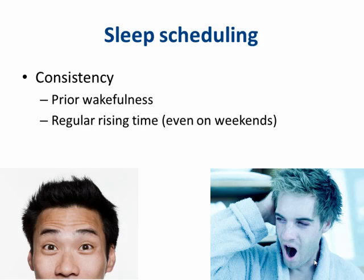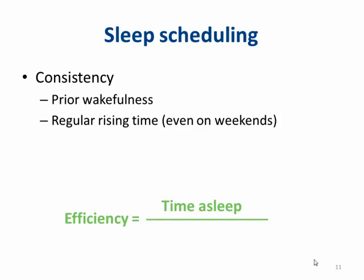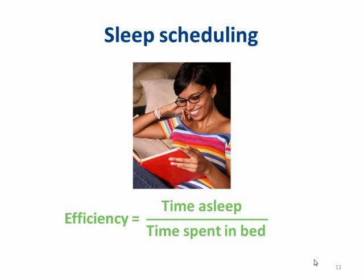When you have a regular rising time — yes, even on weekends — periods of prior wakefulness are consistent from one day to the next. Consistency also helps us become more efficient sleepers. Sleep efficiency can be thought of as the amount of time asleep divided by the amount of time spent in bed. By implementing techniques like winding down before going to bed and creating a sleep-conducive environment, a regular waking time can help you reach a sleep efficiency of 85% or more. You could use this time saved for activities you enjoy, like going for walks, exercising, or relaxing.